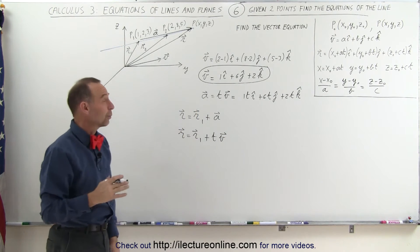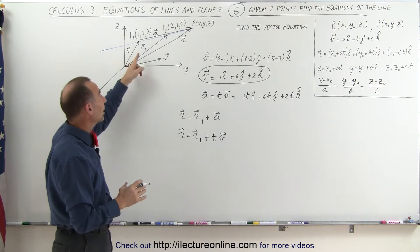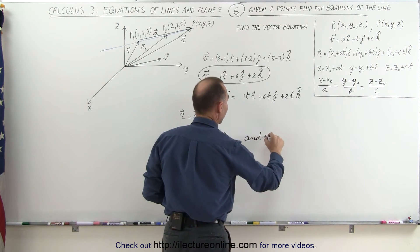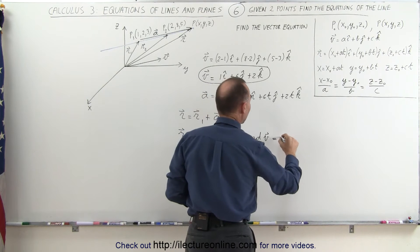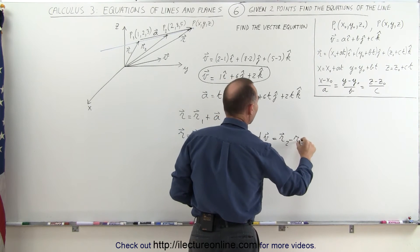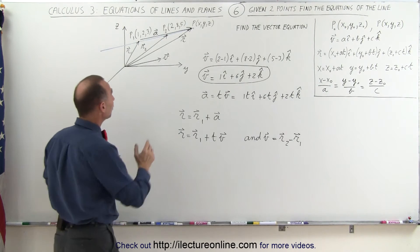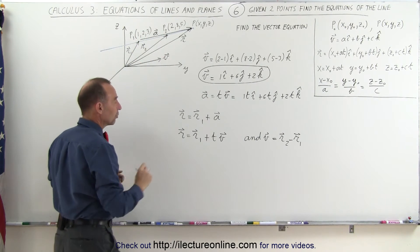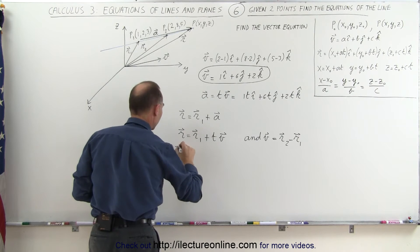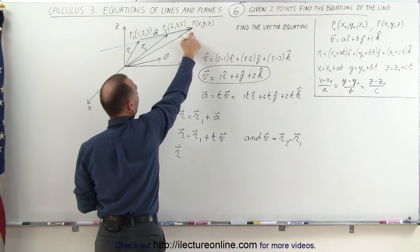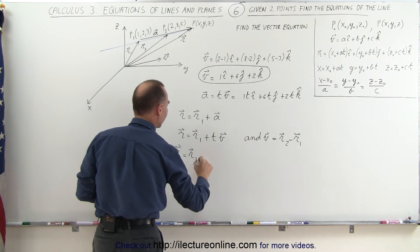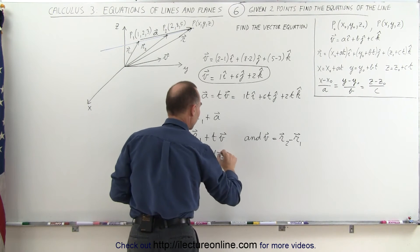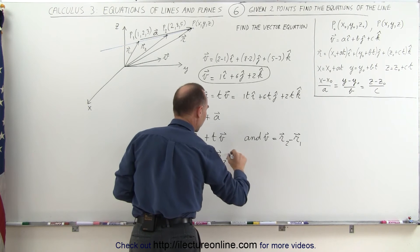We can also write the V vector in terms of R1 and R2. The V vector can be written as the R2 vector minus the R1 vector, because R2 minus R1 gives us the V vector back. This means we can write the R vector — the position vector to any arbitrary point on the line — as R1 plus t times the quantity R2 minus R1.